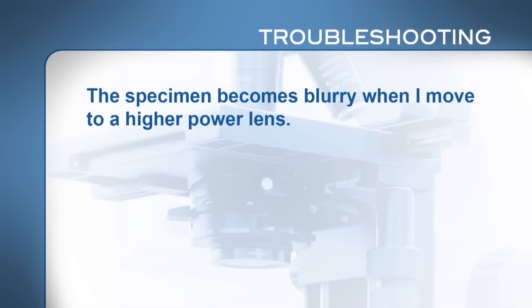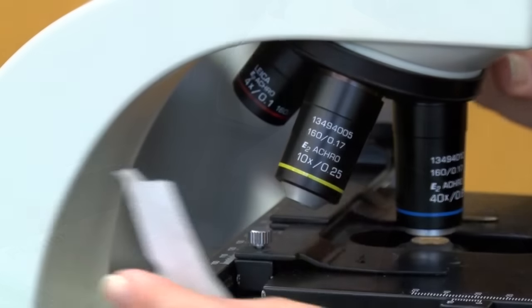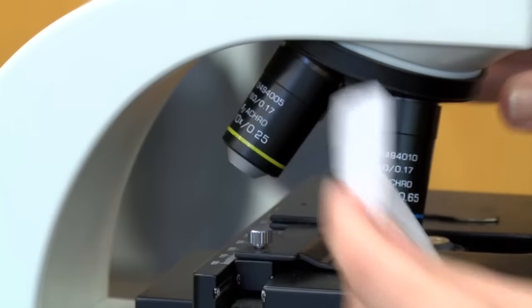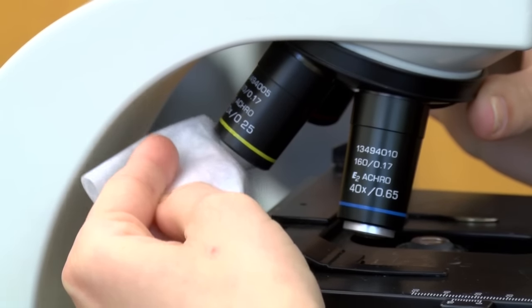If when you move to a higher power lens the specimen becomes blurry as though it were coated with Vaseline and you cannot focus, you may need to clean the lens. Soak a piece of lens paper, and only lens paper, with lens cleaner and wipe the lens. Then wipe dry with clean lens paper. Repeat a couple times. If this doesn't solve the problem, check with your instructor.